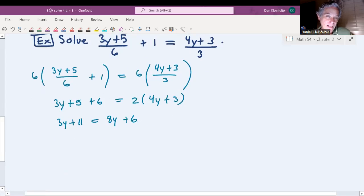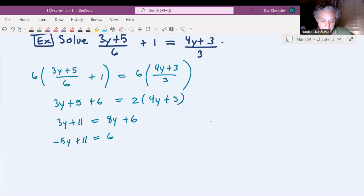This time I think I'll collect the variables on the left just because I haven't done that in a while. So let's subtract 8y from both sides. This will give us negative 5y plus 11 equaling 6. Then subtracting 11 from both sides will give us negative 5y equals negative 5.